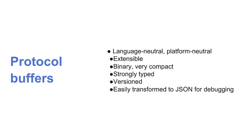Protocol buffers are language-neutral, platform-neutral, binary, and extremely compact on the wire — which makes them great for mobile. They're strongly typed, good for static checking, and you can generate tests for them. They're versioned and backward compatible — when you add new fields, you can still translate to previous versions using sensible defaults. They're also easily transformed to JSON for debugging, so you get readable output rather than a binary blob you can't inspect.